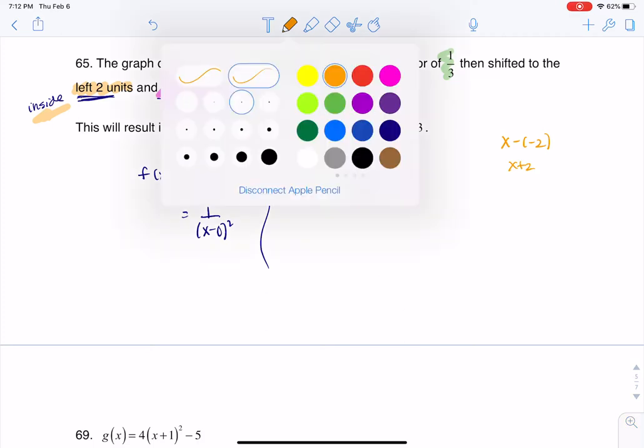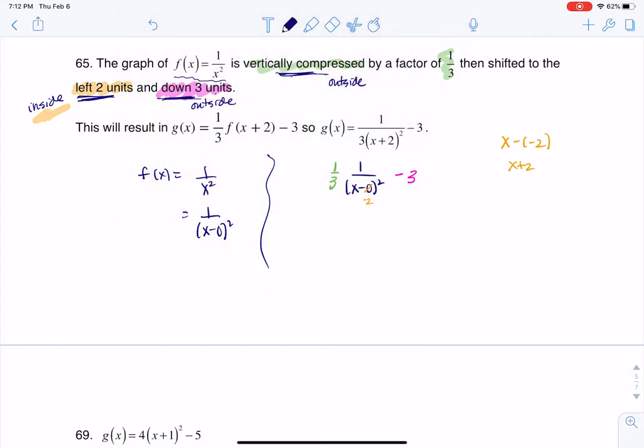If I clean up everything and we look at our function, I have one third, I have one over x plus two squared, and I have a minus three. I'm going to call that g of x, my new function. I'm just going to combo these together. So ultimately g of x is one over three times x plus two squared minus three. Thanks so much, everyone.